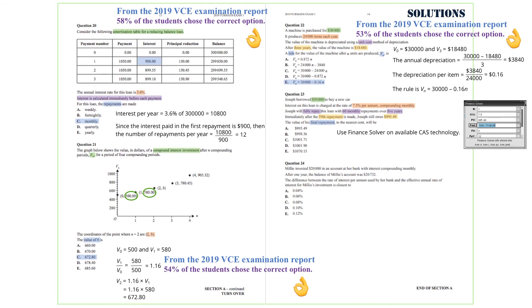So the answer we are after is option C. From the 2019 VCE examination report, 38% of the students chose the correct option.